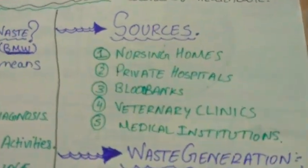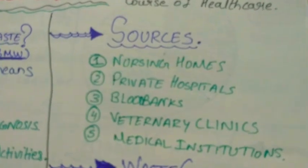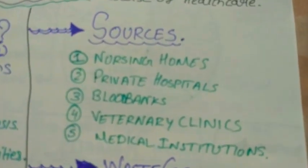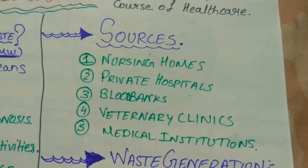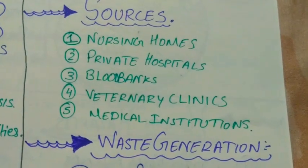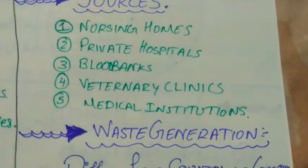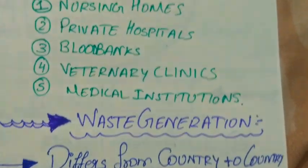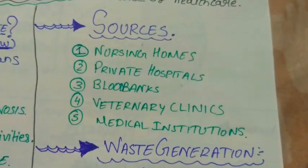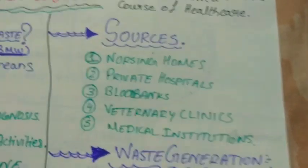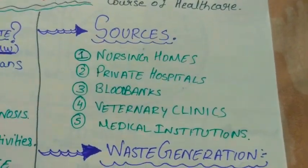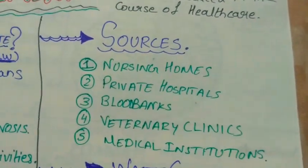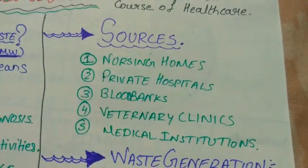Biomedical waste products are generated from any medically related institution or facility — it can be a nursing home, private hospitals, blood banks, veterinary clinics, medical institutions such as anatomy, physiology, microbiology, and pathology labs in MBBS colleges, as well as pathological laboratories where blood tests, urine tests, stool examinations, and skin graft examinations are carried out.